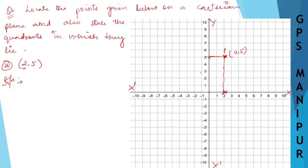So one thing is done — you have to draw the graph. Next, the question is asking: state the quadrant in which they lie. So (2, 5) — this point lies in the first quadrant. It lies in the first quadrant. You need to draw the graph, so let's write that down: it lies in the first quadrant.